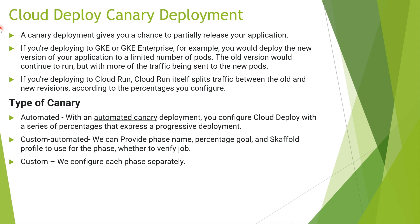If it is working fine, you can just roll out all the traffic to that new version. If we are deploying on GKE or GKE Enterprise, we can deploy the new version to a limited number of pods and the old version continues to run, but more traffic will be sent to the new pod. You can configure how much traffic to send - 10 percent, 2 percent, 5 percent, or 50 percent - and traffic will be sent accordingly. Check the logs, confirm it is working fine, then roll out to all new pods and delete the old ones. Cloud Deploy will do this automatically.